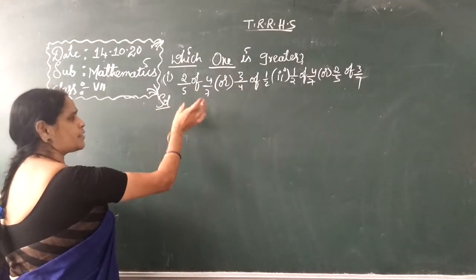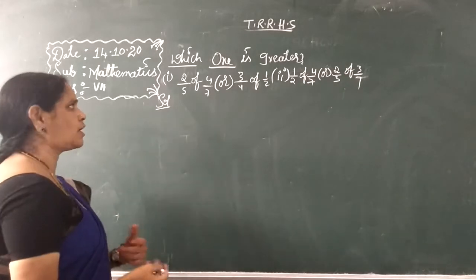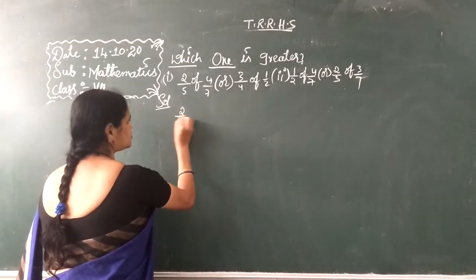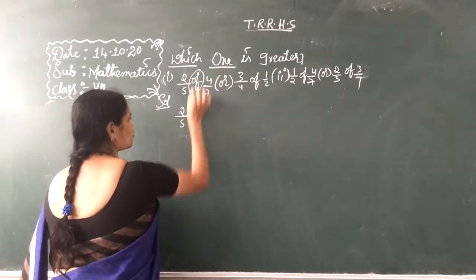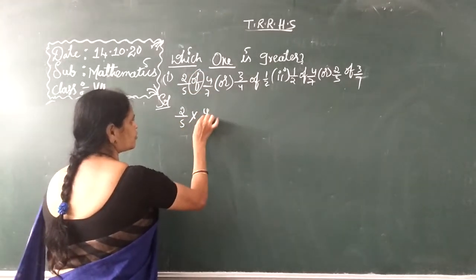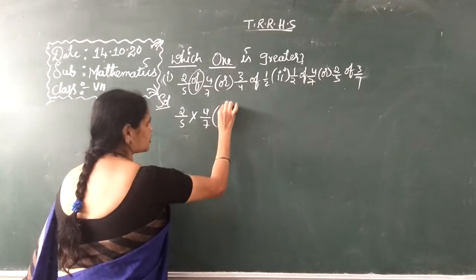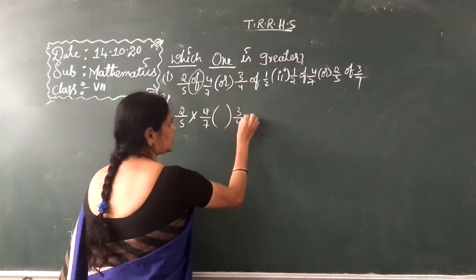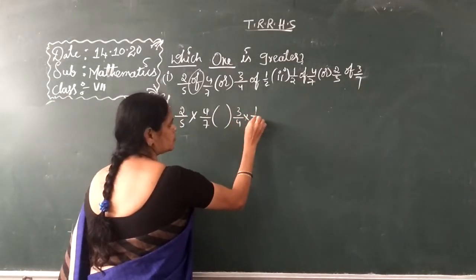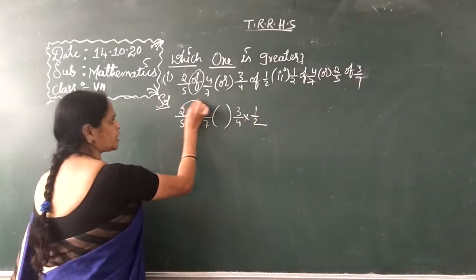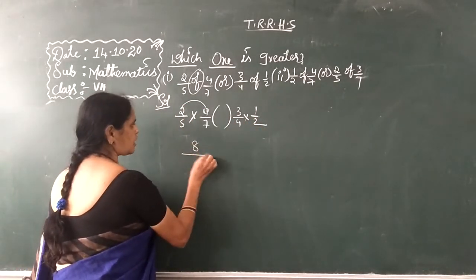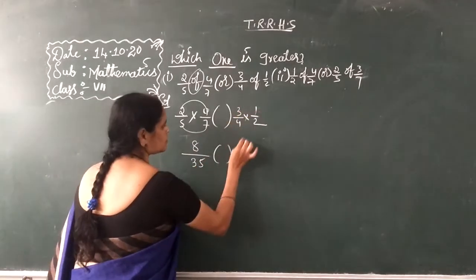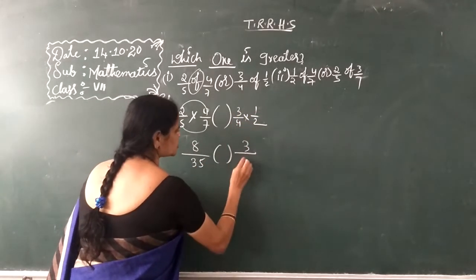So decimals of fractions — in that fraction, which fraction is greater, we have to find out. See here: 2 by 5 — the meaning of 'of' is multiplication — 4 by 7. So you can just drag it here: 3 by 4 into 1 by 2. Now 2 into 4 is 8, 5 — 5 7's are 35, 3 1's are 3, 4 2's are 8.